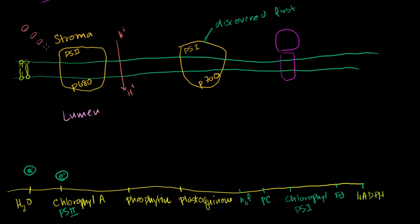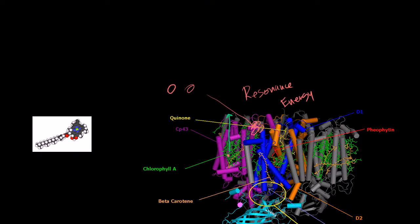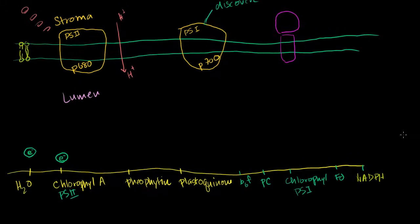You can imagine photons as little light packets, or you could view them as a light wave. And it excites — not necessarily directly the chlorophyll A — it might excite other antenna chlorophyll or other pigment molecules. And then through resonance energy, you can imagine them vibrating, and it eventually will excite the chlorophyll A directly, or excite the electrons in chlorophyll A directly. And this electron gets excited, so it goes to a high energy state.